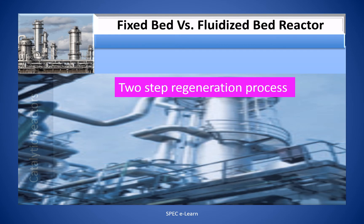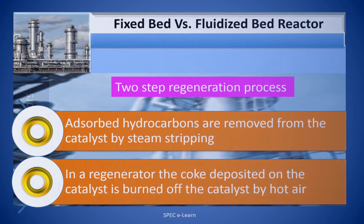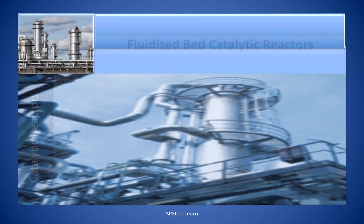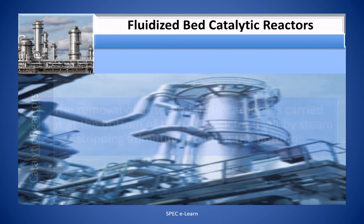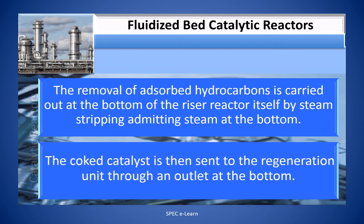The catalyst regeneration in an FCC is a two-step process. In step 1, the adsorbed hydrocarbons are removed from the catalyst particle by steam stripping. In step 2, in a dedicated regenerator, the coke deposited on the catalyst is burned off by hot air. The removal of adsorbed hydrocarbon is carried out at the bottom of the riser reactor itself by steam stripping. The coked catalyst is then sent to the regeneration unit through an outlet at the bottom.